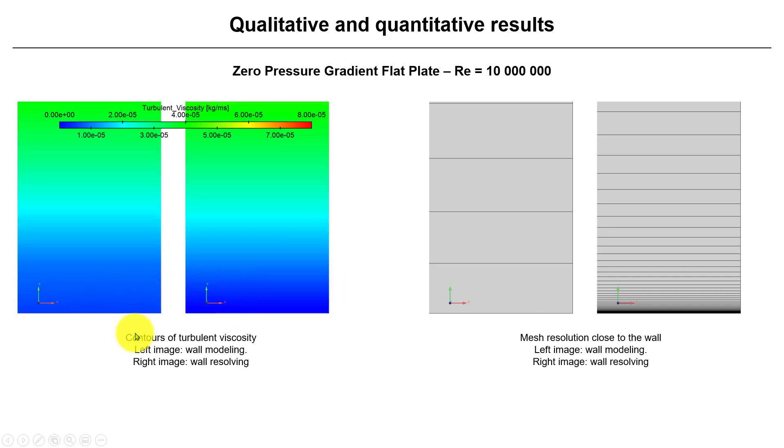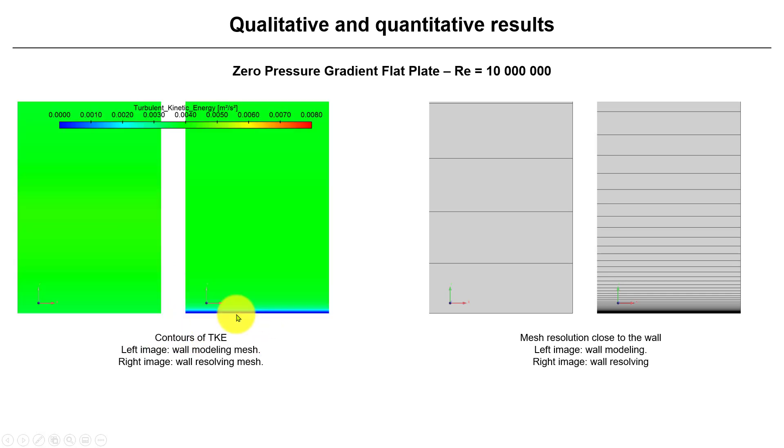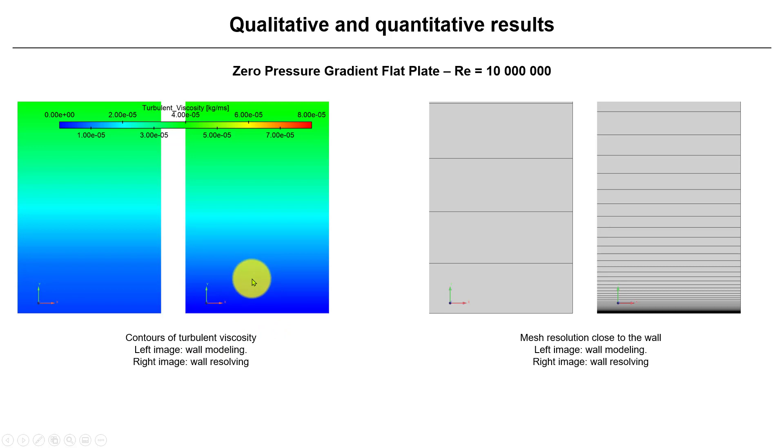We can check then the turbulent viscosity. This is important because even though we have different values for these quantities, and we know that turbulent viscosity is computed from these values, see that what we have here is very similar. By the way, remember that the values are computed at the cell center. What you see here is the interpolation. It's a nodal quantity. This is the wall modeling versus wall-resolving, and both of them have similar values of turbulent viscosity.